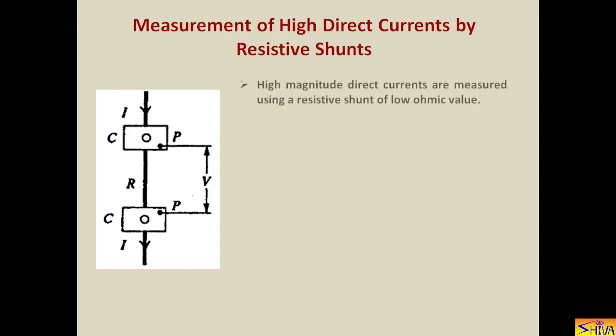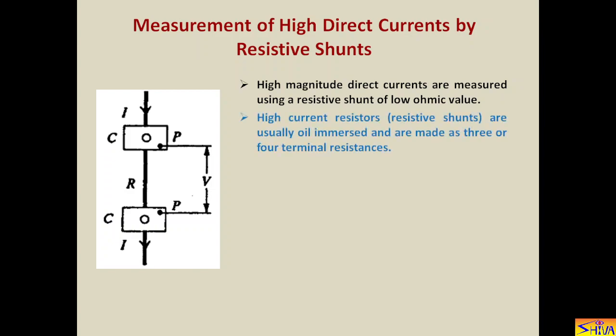The method I am discussing now — measurement by resistive shunt — is useful for AC currents as well as DC currents, but we normally restrict it to DC current only because for AC current we prefer the CT method. High magnitude direct currents are measured using a resistive shunt of low ohmic value. High current resistors are usually oil immersed and made as three or four terminal resistances. These are current terminals CC, and PP are voltage terminals.